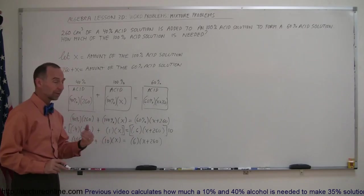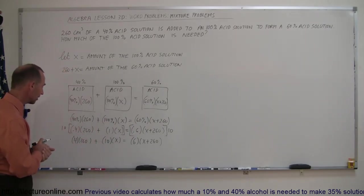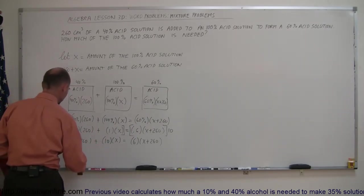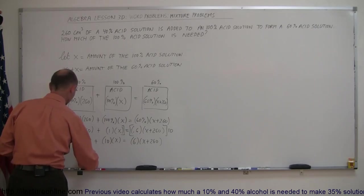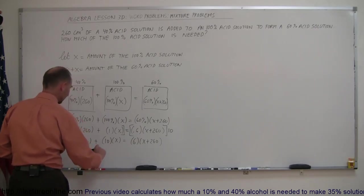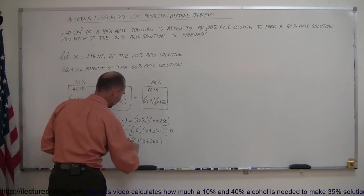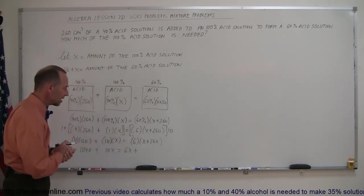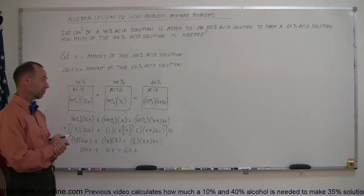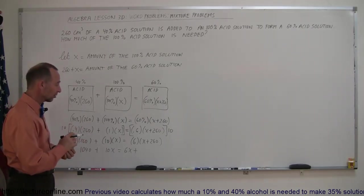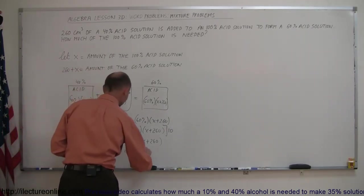Now we can multiply everything through to get rid of the parentheses. So 4 times 260 that's 1040, plus 10X, equals 6X plus, and 6 times 260, while 6 times 250 is 1500, so add another 6 times 10, that's 1560.